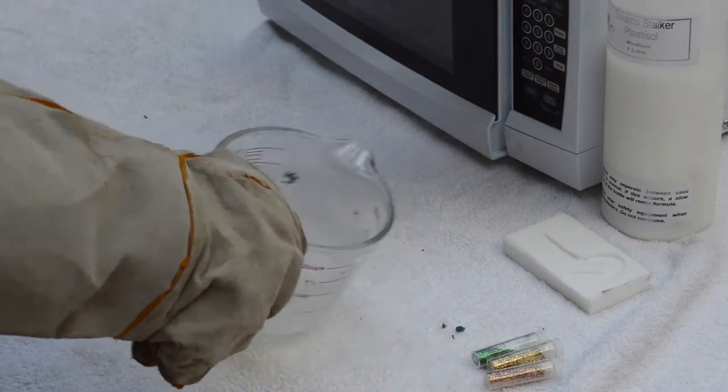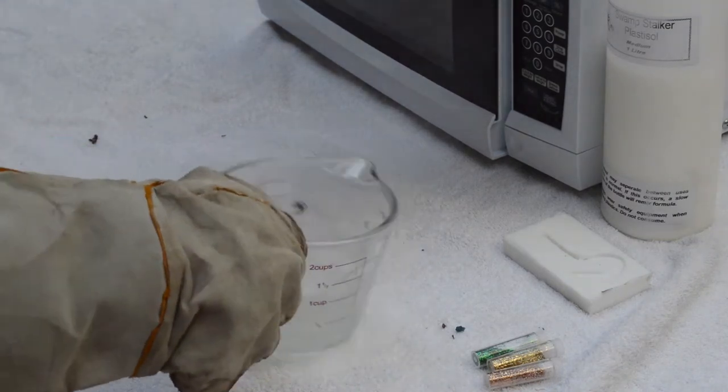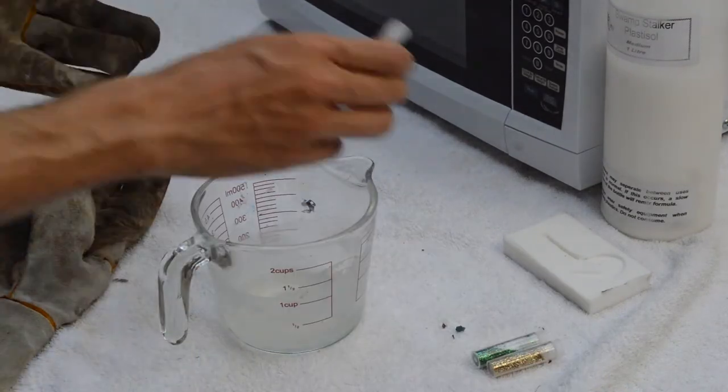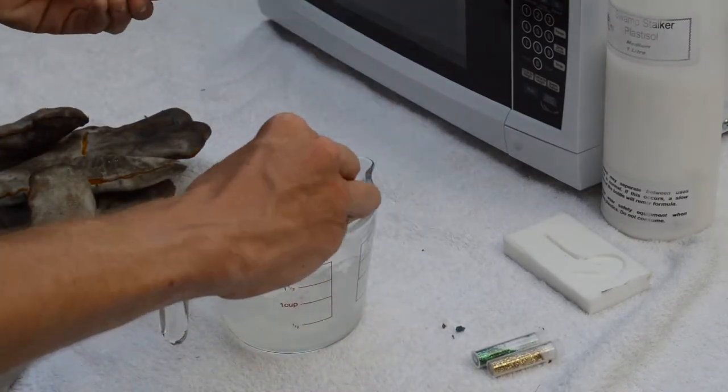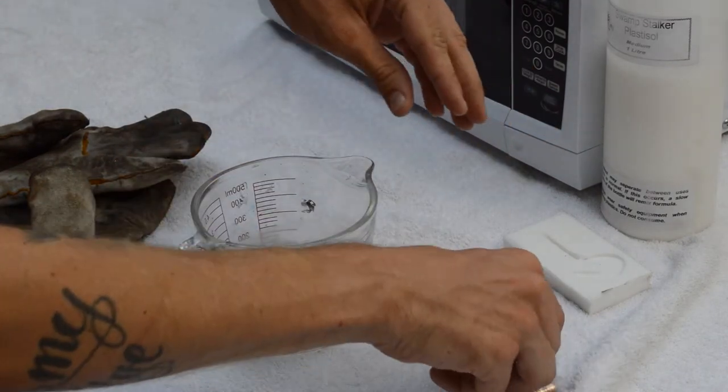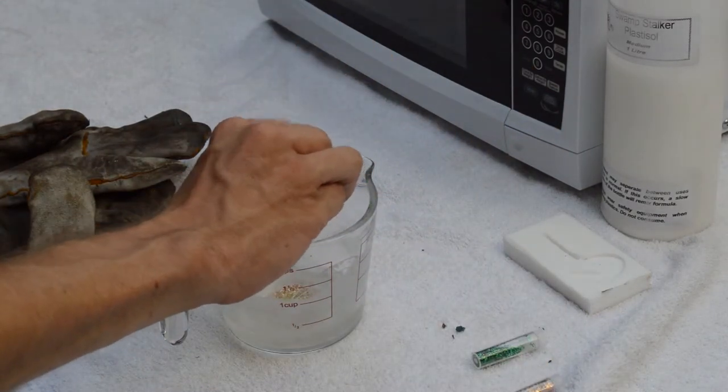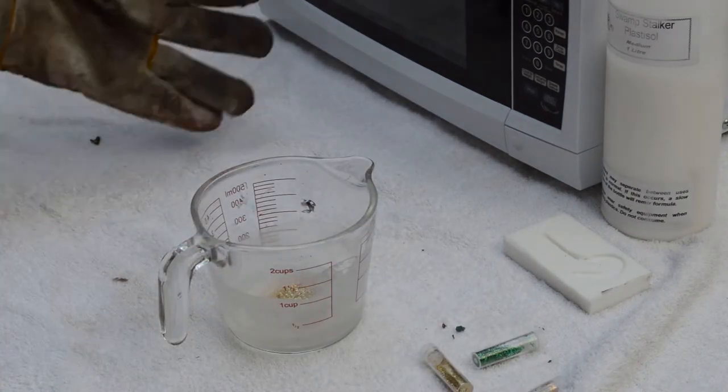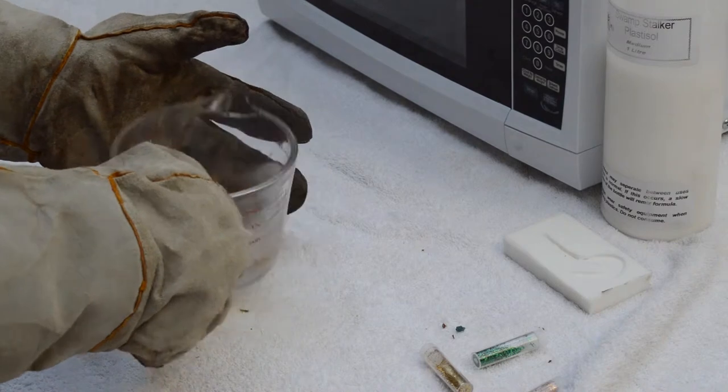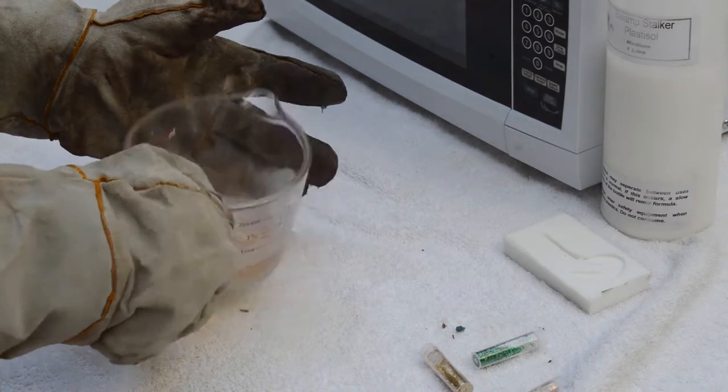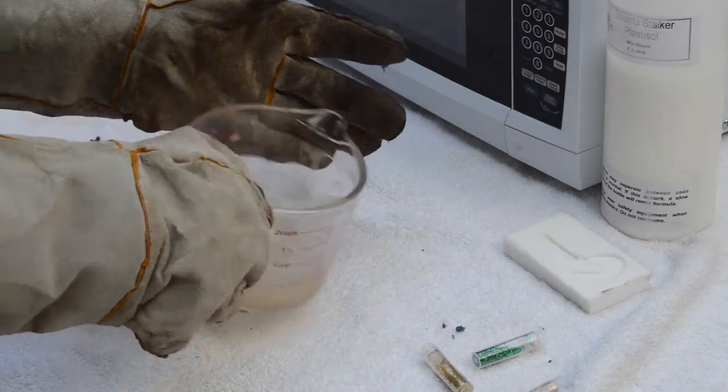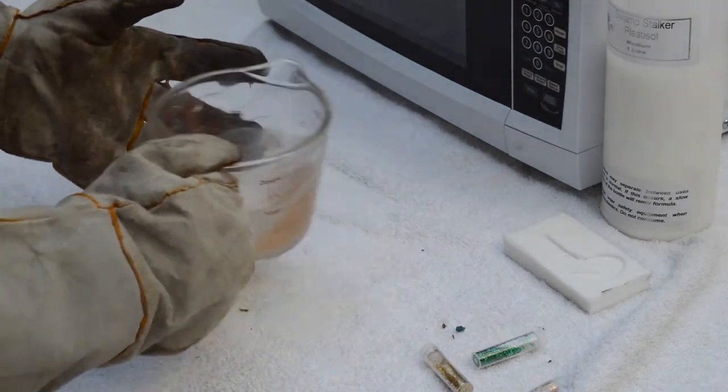Once the Plastisol is clear, you can then add your glitter. After adding your glitter, you want to microwave for another 15 seconds, and you're ready to pour.